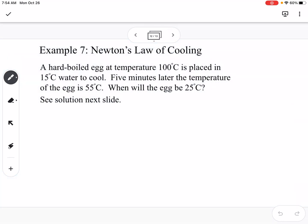We are going to do a problem with this. It says a hard-boiled egg at temperature 100 degrees Celsius is placed in 15 degrees Celsius water to cool. Five minutes later, the temperature of the egg is 55 degrees Celsius. When will the egg be 25? See solution next slide. We're going to do the solution in this slide.